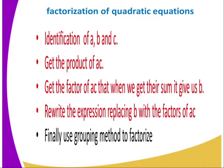Get the product of AC. After getting the product of AC, get the factors of AC that when we get their sum, it gives us B. Then write the expression, replacing B with the factors of AC. And then finally, using the grouping method, we factorize. Those are the steps that we follow when factorizing an equation.